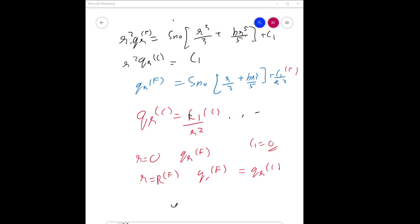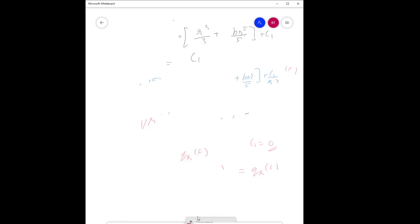You can substitute these two values into your equation. You get Q_R_F = S_n0(R/3 + BR_F^2 R^3/5) = S_n0 R(1/3 + BR_F^3/5).